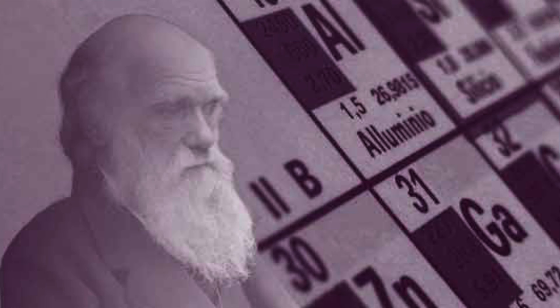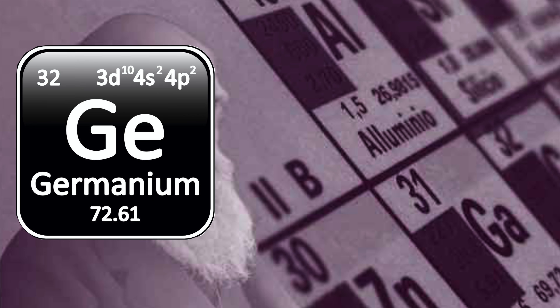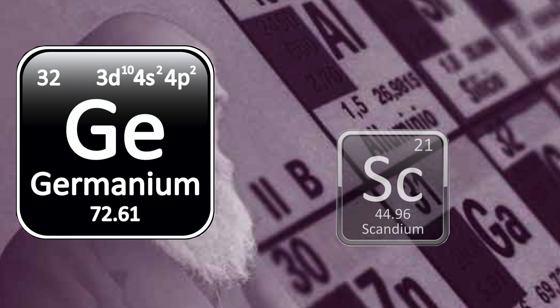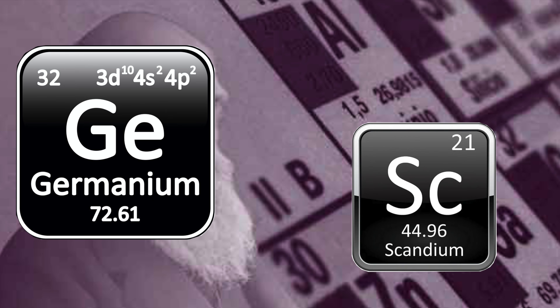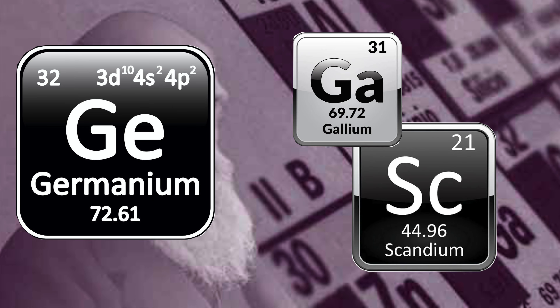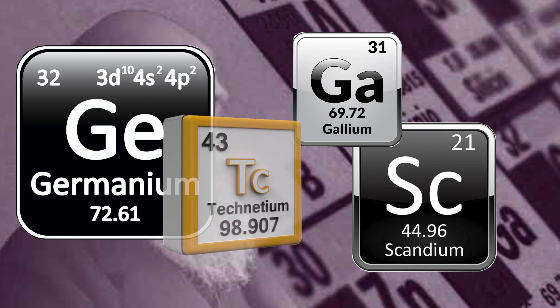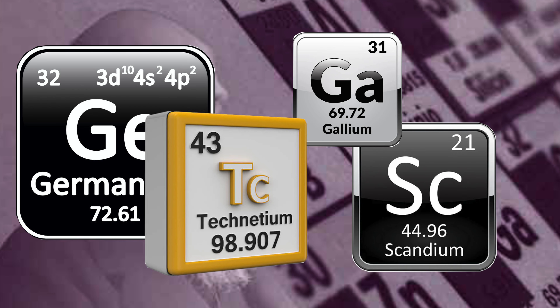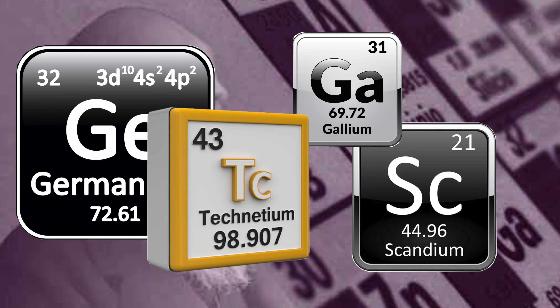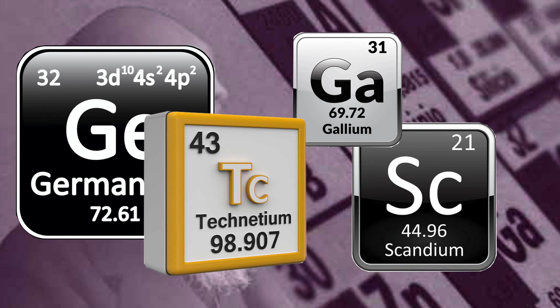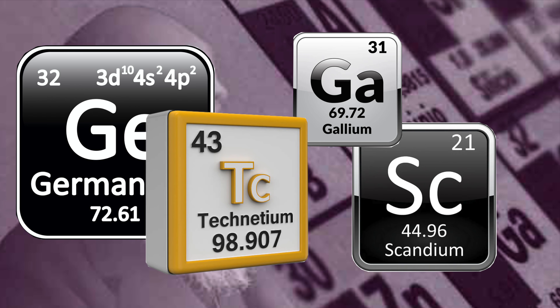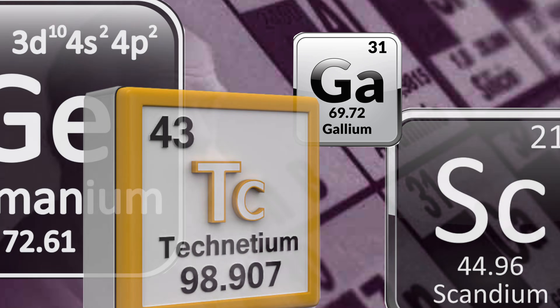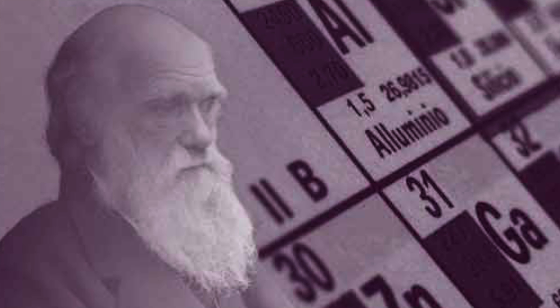He also predicted the existence of at least five other elements, including a very rare element called technetium. Scientists searched for all the missing elements in Mendeleev's table and eventually found all of them.